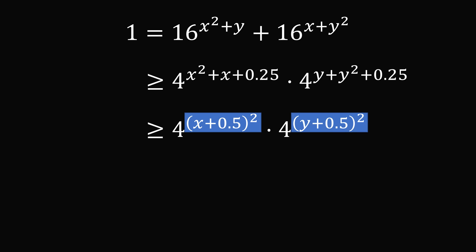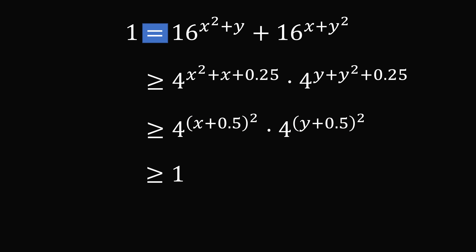Each exponent is a square term, so each exponent will be greater than or equal to 0. 4 raised to a power that's greater than or equal to 0 will be greater than or equal to 1. So this product will be greater than or equal to 1. We've shown that 1 equals something and it's greater than or equal to all these expressions, and finally 1 is greater than or equal to 1. So we've now squeezed all of these expressions between 1.